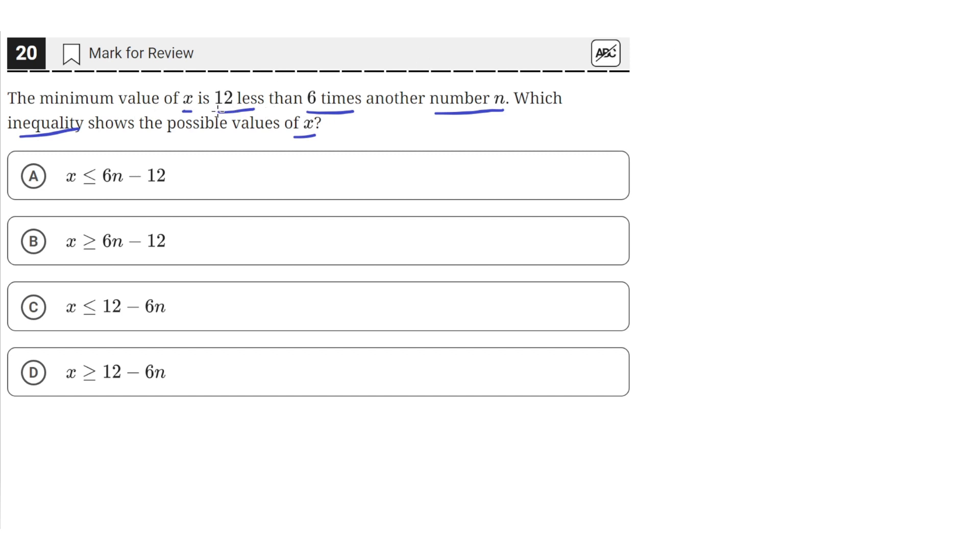So the minimum value of x is 12 less than 6 times a number. So 6 times another number n is 6n, and then 12 less than that is just 6n minus 12.